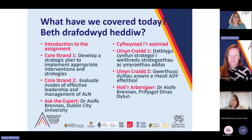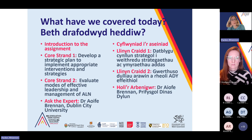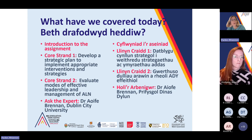Di and Alison went over Core Strand 3, which is to develop a strategic plan to implement appropriate interventions and strategies, and discuss the value of knowing the learners that you've got. Considering a variety of strategies and interventions that you can implement, and reflecting on those to see whether they work for the learner. Emma Bowles talked about a very interesting individual case where they had to turn what they'd planned on its head and look at it from the perspective of the learner, providing interventions from that perspective rather than looking at the interventions first.